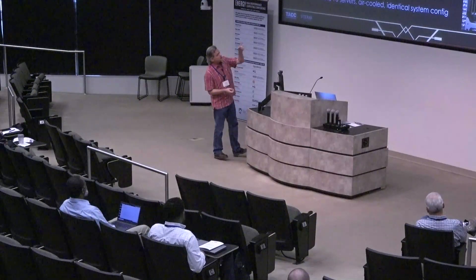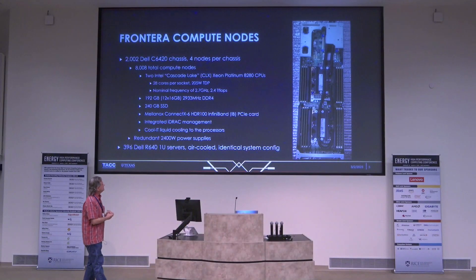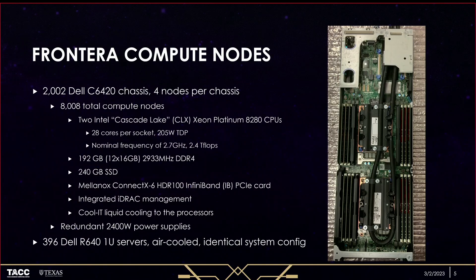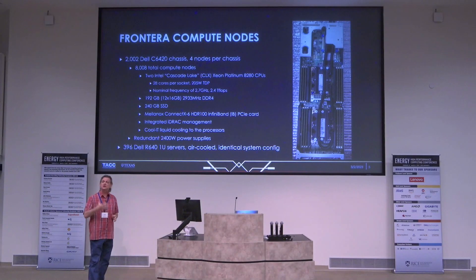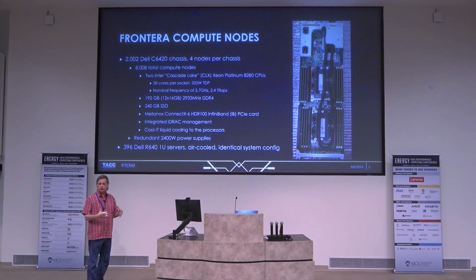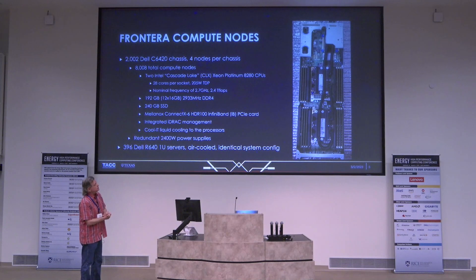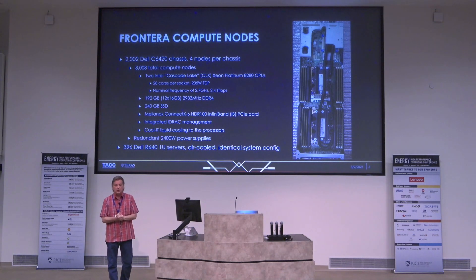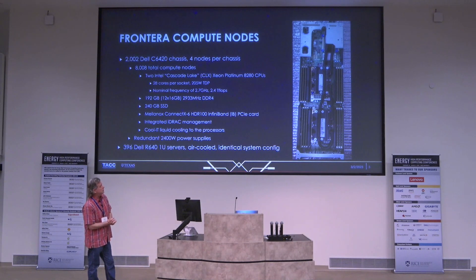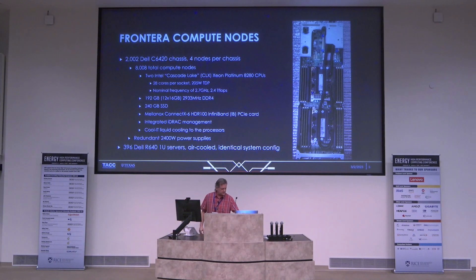We have cool-IT loops on the system that provide the bulk of the cooling. Since only the processors are liquid-cooled, there's still some other power inside the chassis requiring cooling, so we put chilled doors on the back. About 75% of the cooling comes from the direct liquid cooling and 25% from the chilled doors — about 15 kilowatts out of the chilled doors — making it room neutral. These are four nodes per chassis and they've been great workhorses. We also have AMD follow-on chassis as part of the Lone Star 6 system.